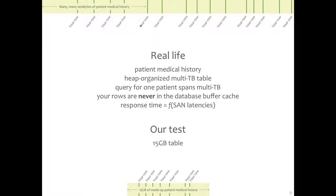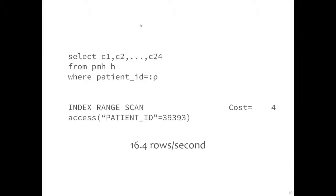In our test, we mimicked this patient medical history table with a 15-gigabyte table that resembles the characteristics of having rows spread out all over the place. We replicated the patient medical history query — it selected 24 columns and essentially used a patient ID bind variable. By default, we got an index range scan that had a very low cost as seen by the CBO, accessing by individual unique patient IDs.